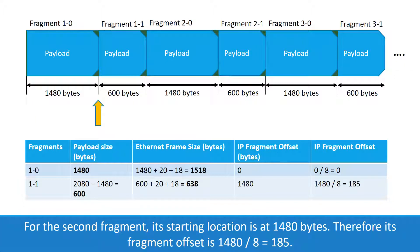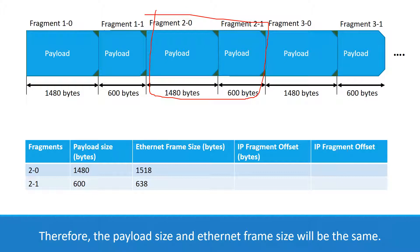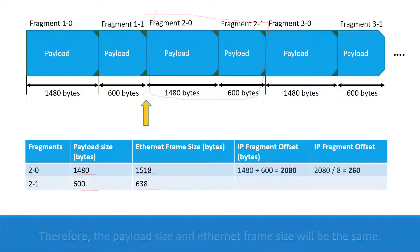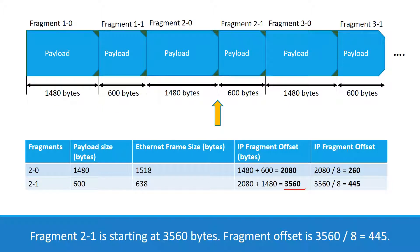For the second fragment, its starting location is at 1480 bytes, so the fragment offset is 1480 divided by 8 equals 185. For the second original fragment, it is also 2100 bytes in size, so the payload size and Ethernet frame size will be the same. Fragment 2.0 starts at 2080 bytes, giving a fragment offset of 2080 divided by 8 equals 260. Fragment 2.1 starts at 3560 bytes, giving a fragment offset of 3560 divided by 8 equals 445. Here is the full answer for this question.